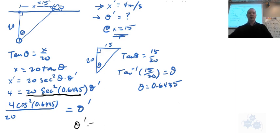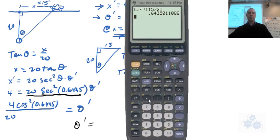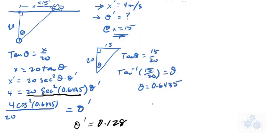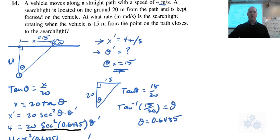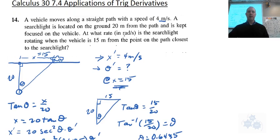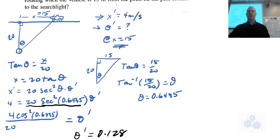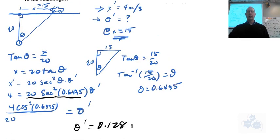So theta prime then is going to be whatever that is when you plug it into the calculator. So 0.128, and then of course we're talking about radians per second.